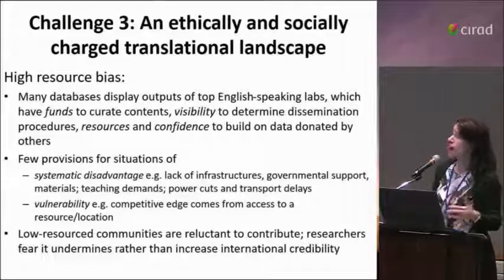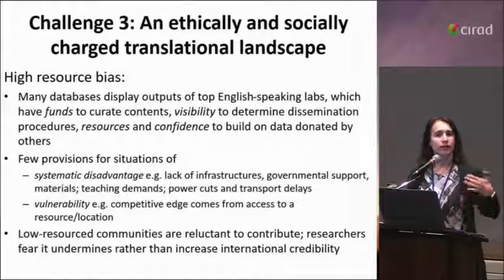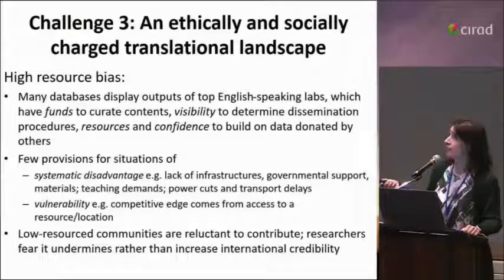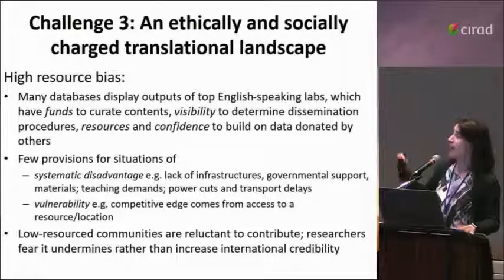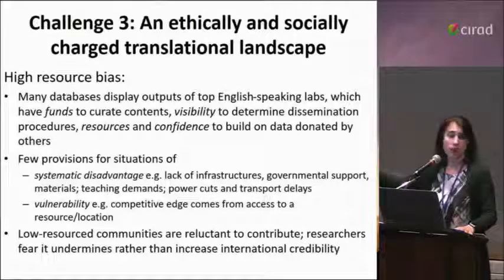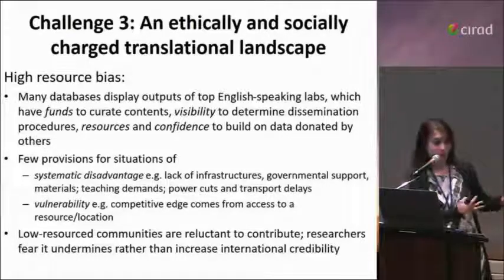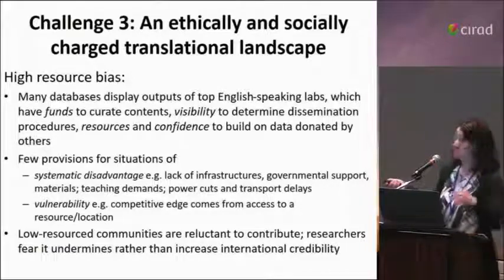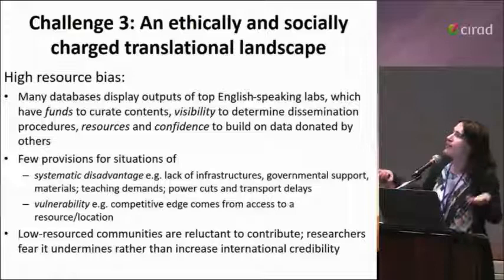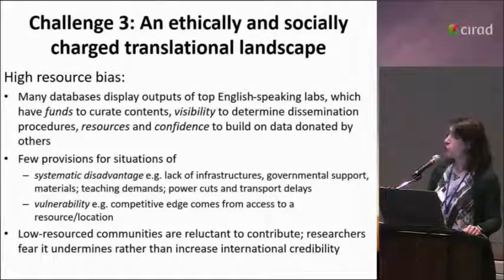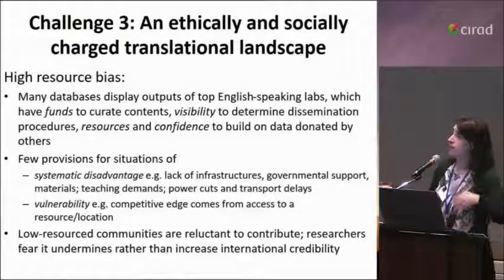One of the things we've seen very often — much less in this community, but still issues that impinge on it — is that very many of the databases used to disseminate data actually display outputs of usually top English-speaking labs. In fact, that also goes to some extent for the crop ontology, where a lot of that work has come as an inspiration from things like the gene ontology and the plant ontology, which had a very different origin — really serving top English-speaking labs. These labs have funds to curate context, visibility to disseminate their procedures, and the confidence to actually share their data and build on data donated by others. This is very different from situations where there is systematic disadvantage: lack of infrastructure, governmental support, materials, teaching demands, power cuts, all these kinds of things.